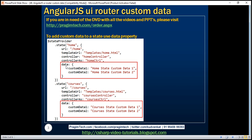Notice the value for the data property is a JavaScript object. This JavaScript object has got two properties: custom data 1 and custom data 2. The values are home state custom data 1 and home state custom data 2.